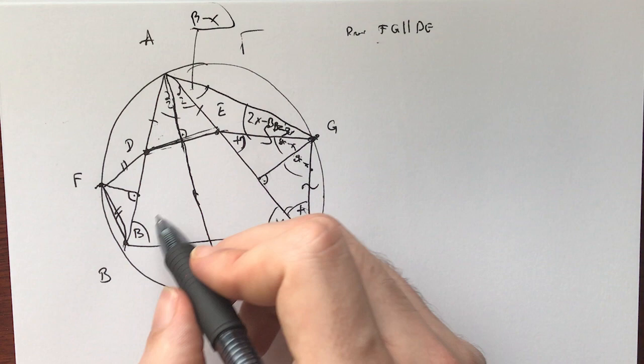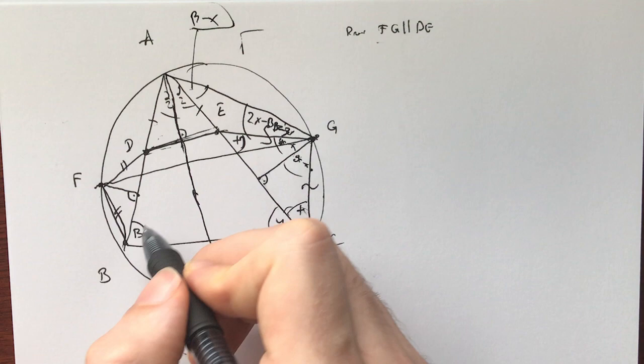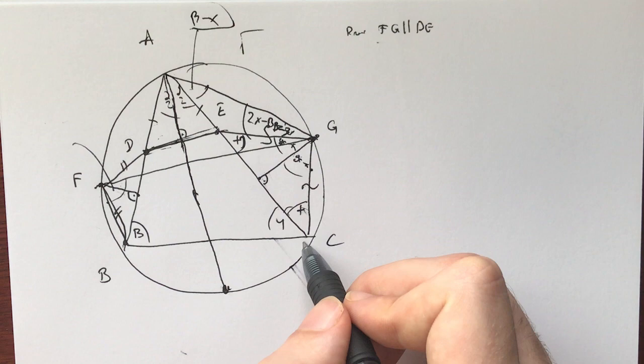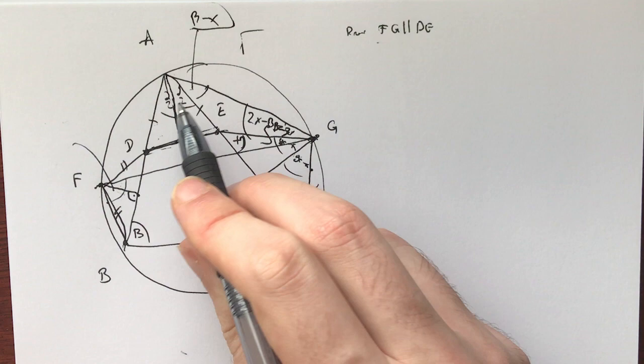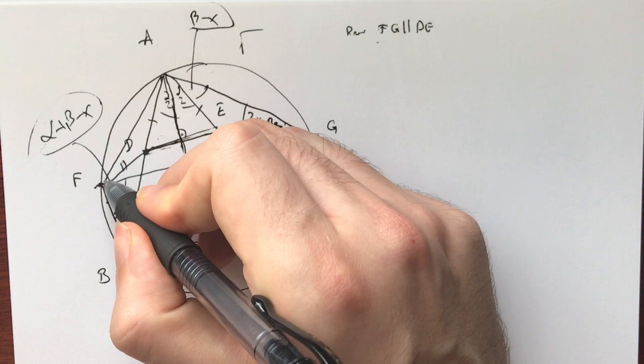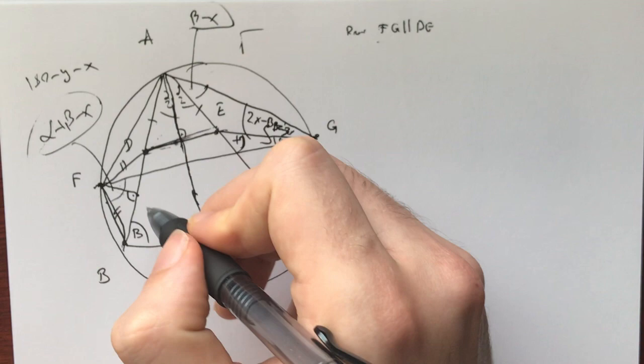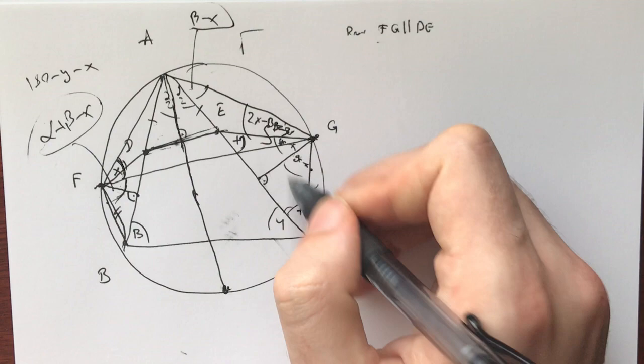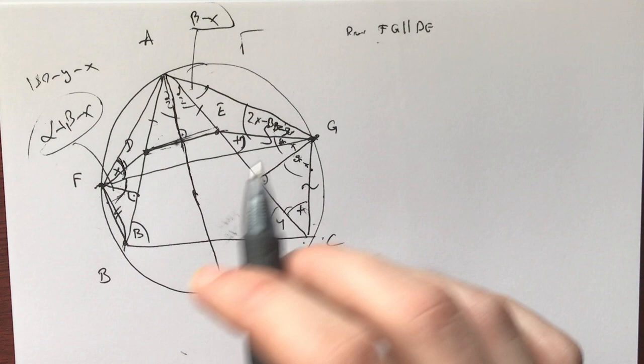Now we can connect F and G actually. This whole angle will be alpha because BFC is alpha and CFG is going to be CAG. So this is 180 minus gamma minus X. This means I have an extra X, so this is X. Sometimes you're doing these problems and you think, oh my God, I'm so close, and then it's like, no, you already had that.